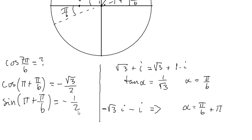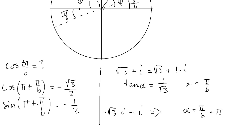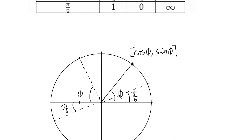And the sine of the same angle is minus one half. This is due to the table values, so it's easy to see. Using this unit circle, we are able to find cosine, sine, and tangent values for many other angles as well.